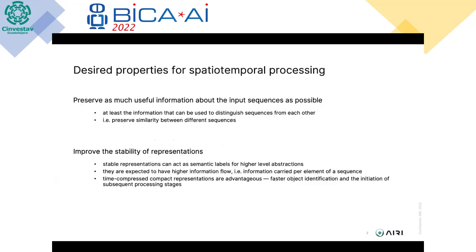Before discussing the algorithms, let's consider what we desire from a spatial-temporal processing algorithm. The first property is to preserve as much information as possible. However, we don't know in advance which information is useful, so we use a proxy constraint — for example, constraining the algorithm to preserve similarity between any pair of sequences, so we can still distinguish sequences from each other after processing.